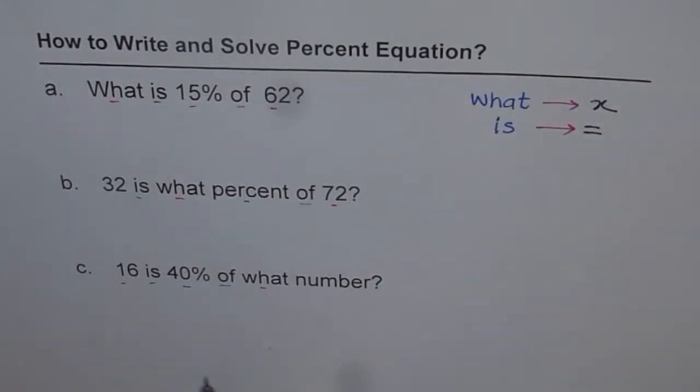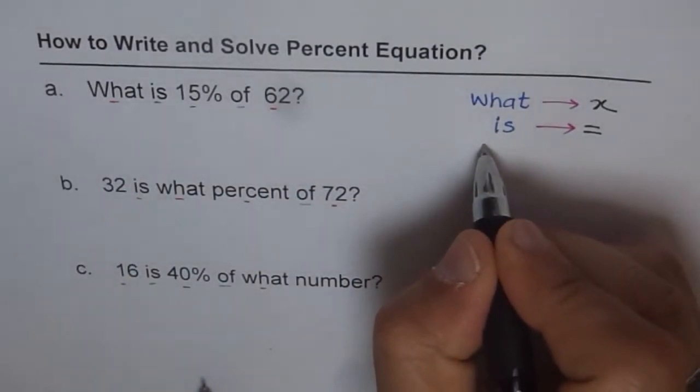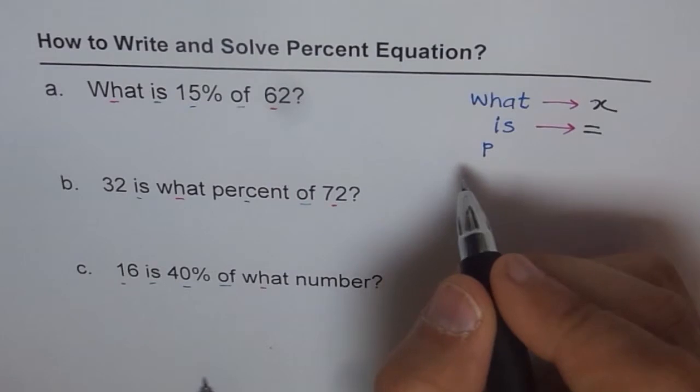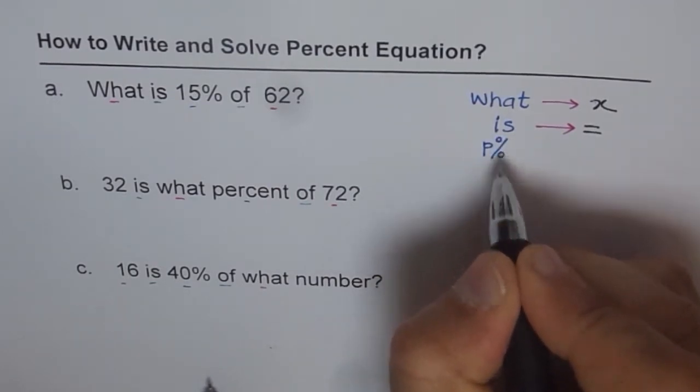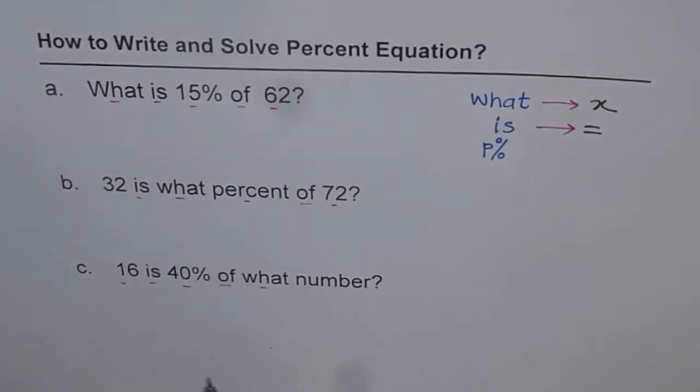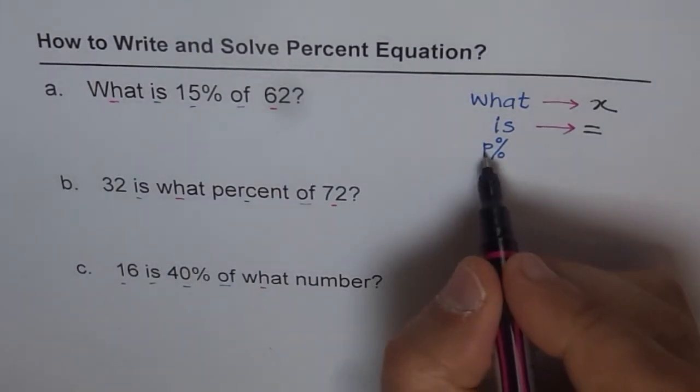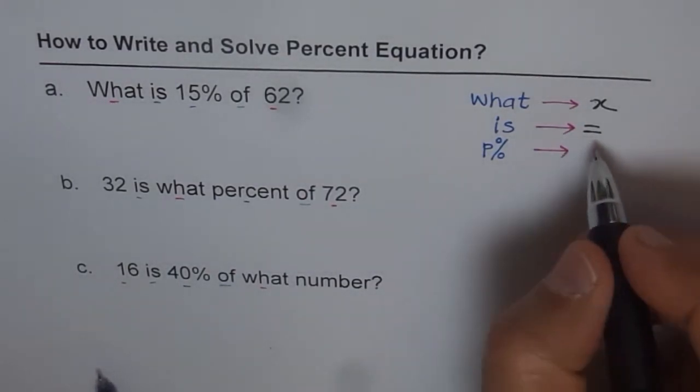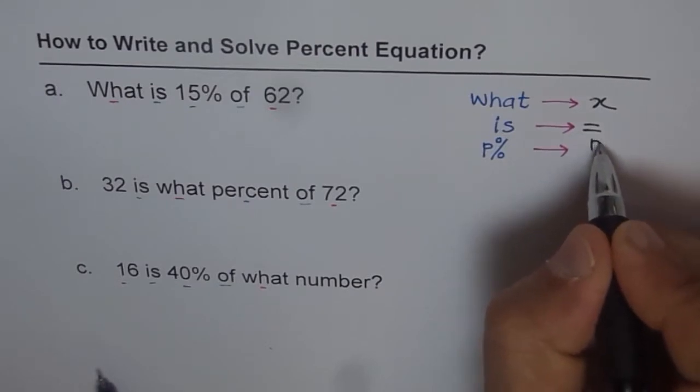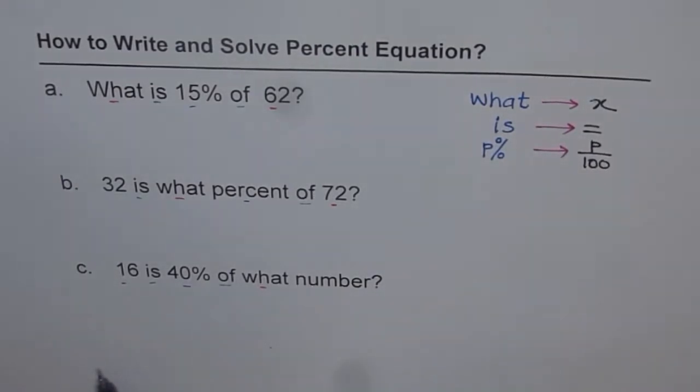The next word is 15%. So 15%, let me write this in general. Sometimes we are using 40%, 30%, I'll write P percent. So it could be any number. If it is 15, write 15 for P. For that, we have a very simple thing. Percent is seen as a fraction, something over 100. So it is P over 100. That is the meaning of percent.